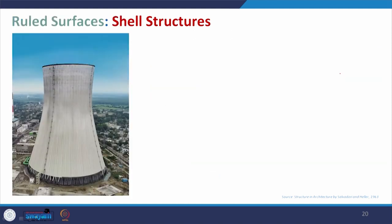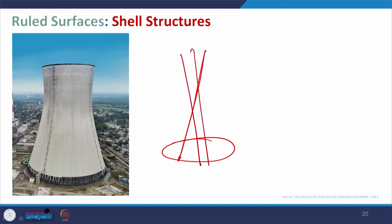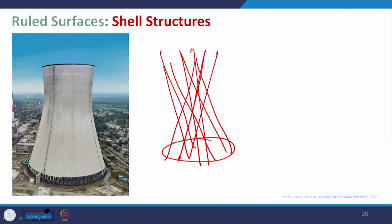The ruled surface is where you have a circular base or similar form, then decide on one member and rotate it in a different pattern. This gives a form like a twisting tower. The cooling tower is also an example of a ruled surface.